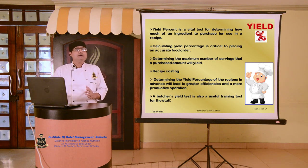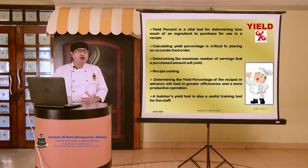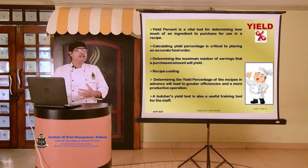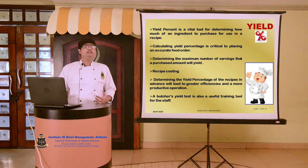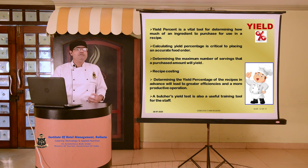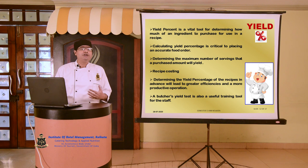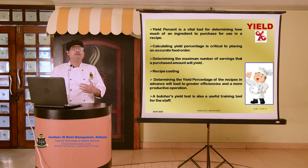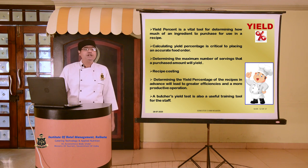Yield percentage also helps in the very important factor of recipe costing. When the larder is very sure about the total cost of the raw material going into the production of a certain dish, recipe costing can be done in a more effective way. This helps to maintain a proper profit percentage and at the same time gives the benefit of cost to the customer as well.